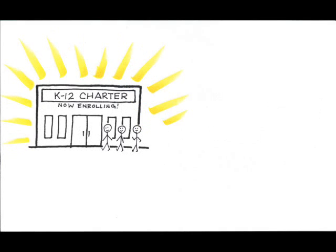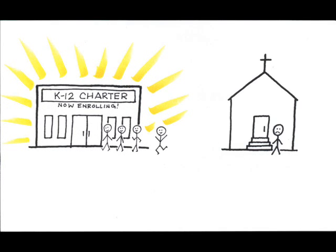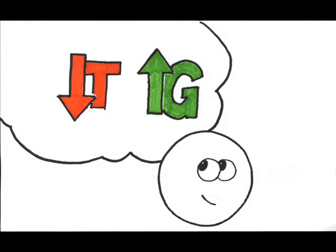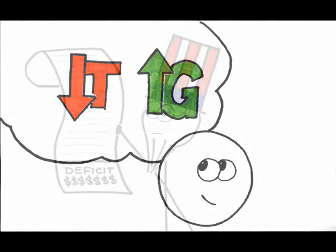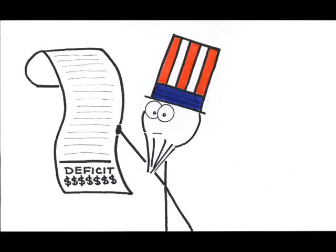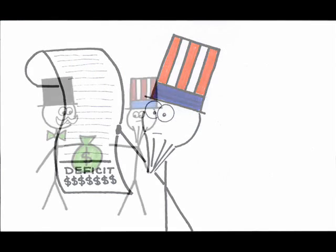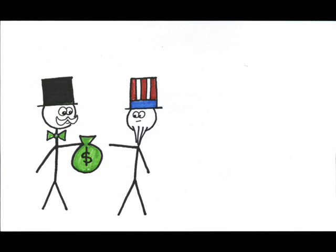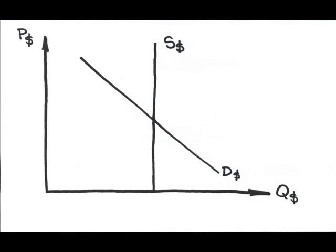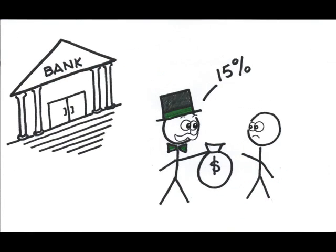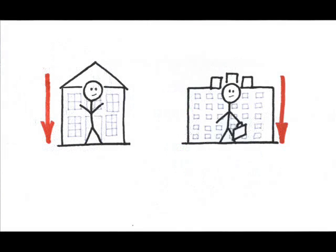Or the crowding out can be the indirect result of the expansionary policy. If the government increases spending or decreases taxes, it will increase its own deficit. Then the government needs to borrow in order to pay for the overspending. This added demand pressure for credit drives up the price of credit or interest rates. As interest rates rise, consumption and investment spending fall.